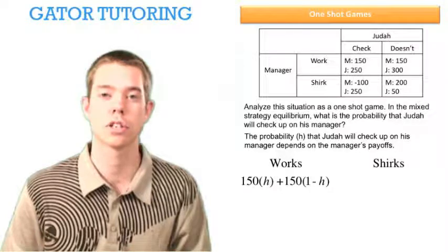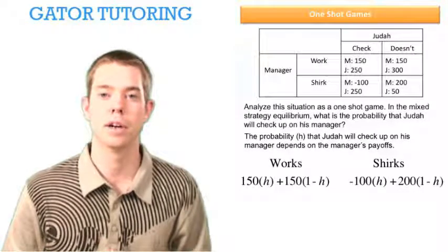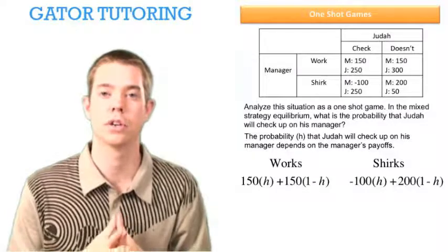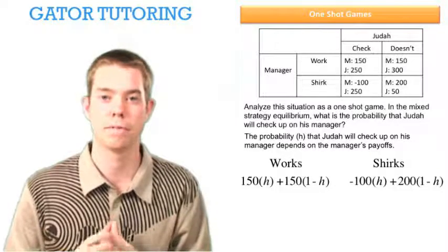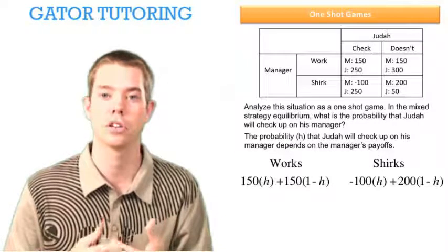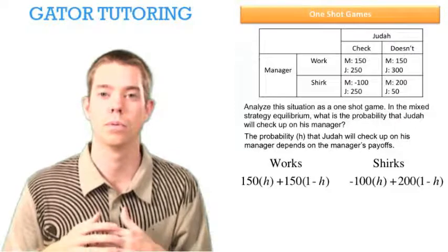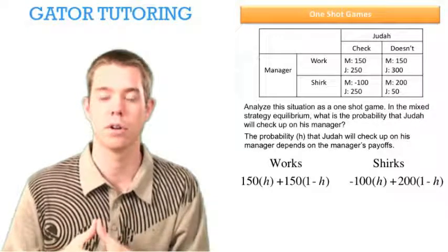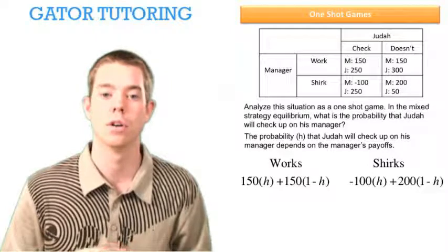If the manager shirks, it's going to be a little different story. Now H is going to be paired with the negative 100 because he was shirking off and Judah came in and checked on him and caught him in the act and he punished him. So he made negative 100 as a payoff. If he was not checked up on, 1 minus H, well, then he makes a positive $200 payment when he shirks.